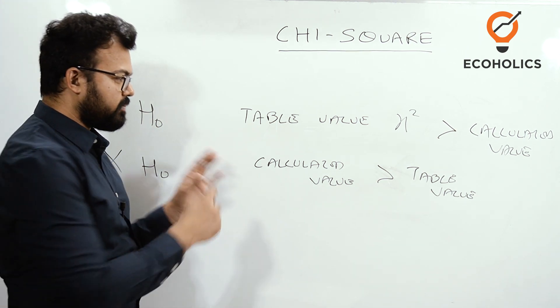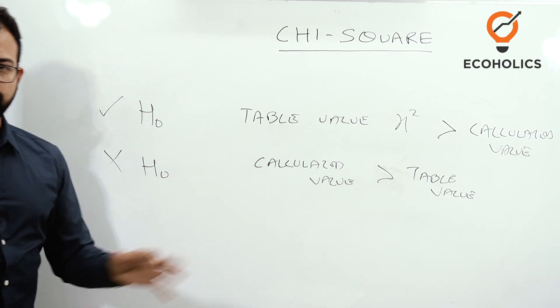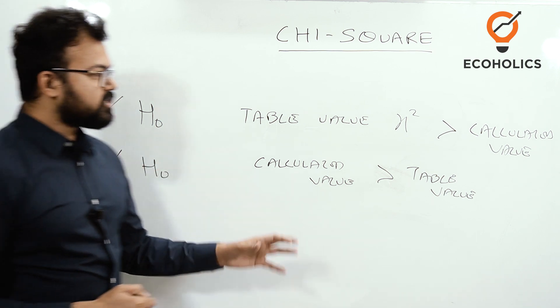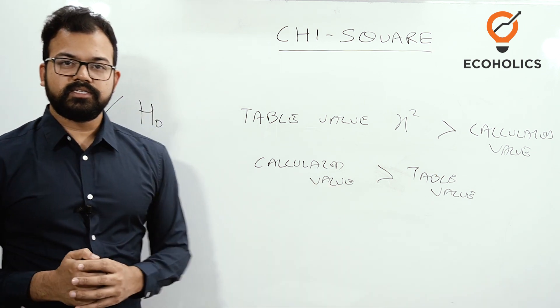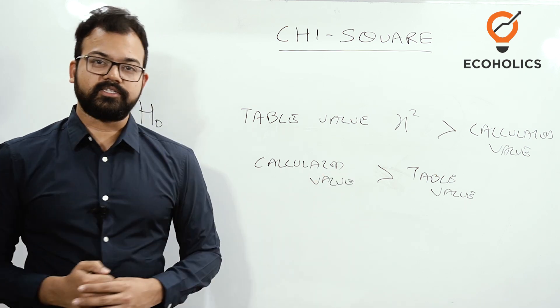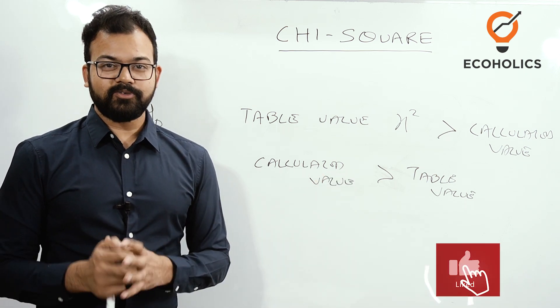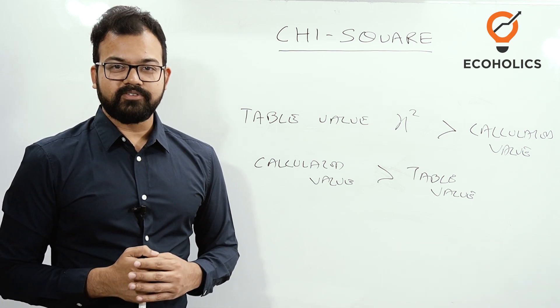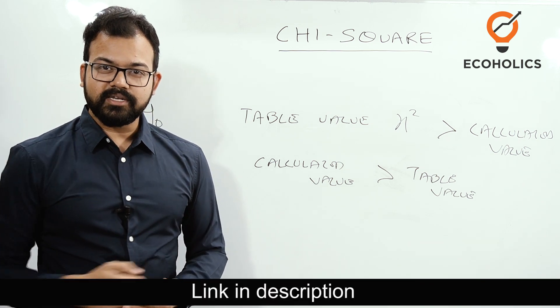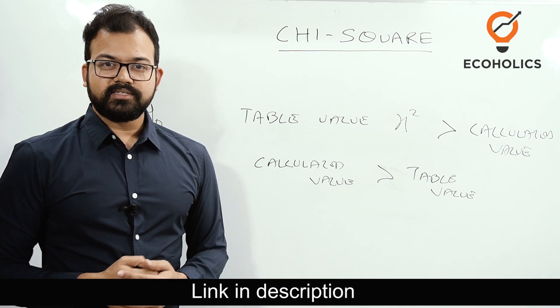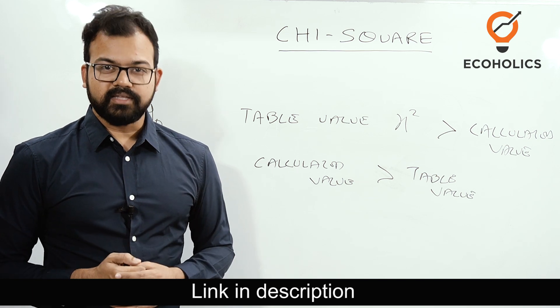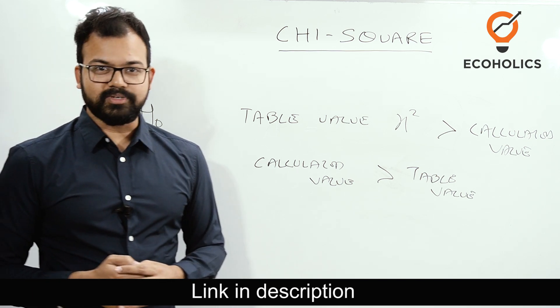If you don't know about hypothesis, we have a separate video linked in the description. I hope you understand this theory. In the next video we will discuss the numerical part of chi-square. Please don't forget to like, share, and subscribe to Ecoholics. We have courses for different competitive examinations where we provide live classes, hard copy study material, and doubt facilities. You can visit the link in the description. Thank you so much.